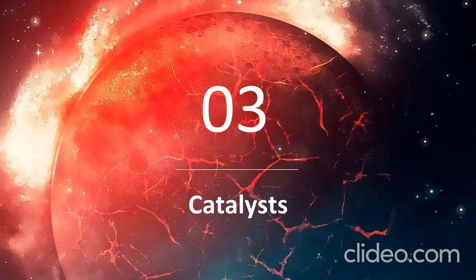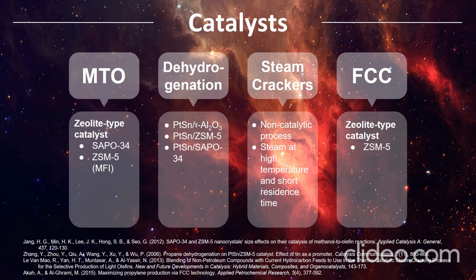Next, catalysts. For the MTO process, zeolite-type catalysts are mainly used, such as SAPO-34 and ZSM-5. ZSM-5 favours the production of propylene due to the olefin methylation cracking reaction. For the dehydrogenation process, platinum-based catalysts are mainly used, mixed with other materials such as gamma-aluminium oxide, ZSM-5, and SAPO-34. The platinum-ZSM-5 catalyst shows lower propylene selectivity due to its higher acidity. For steam crackers, it is a non-catalytic process using steam at high temperature and short residence time. For the FCC process, zeolite-type catalysts such as ZSM-5 are used.